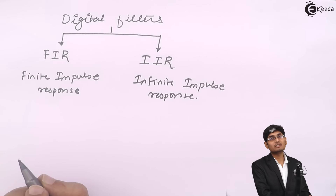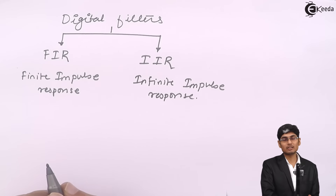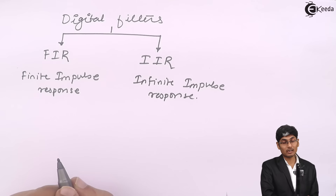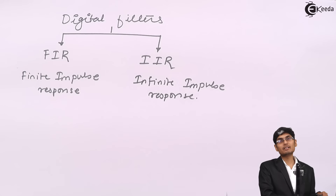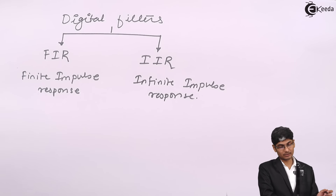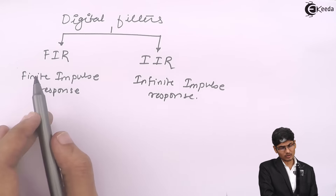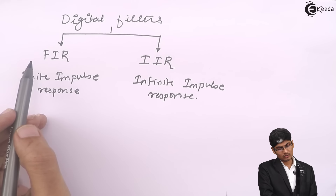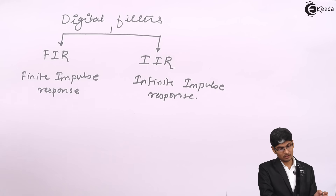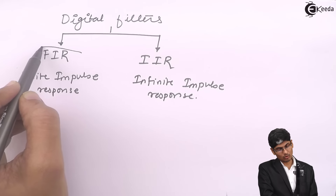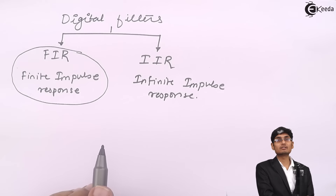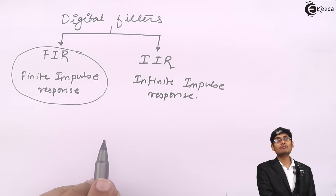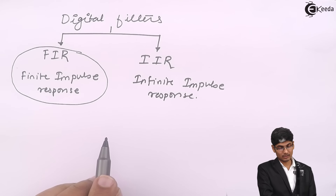We basically classify the digital filters into two categories: one is Finite Impulse Response Filters and second one is Infinite Impulse Response Filters. The topic for today is that we are going to see more in detail about FIR filters, that are Finite Impulse Response Filters.